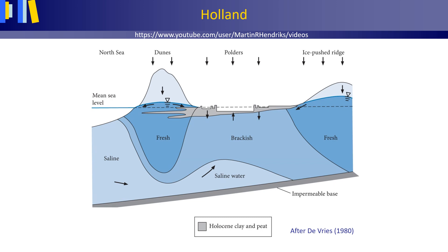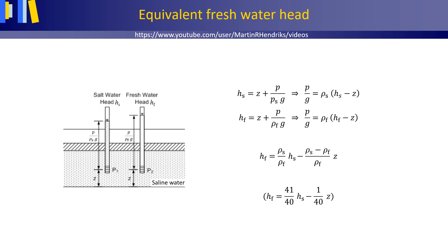This figure is a geohydrological profile through the western part of the Netherlands, Holland. Here we have the mean sea level, the dunes, the Holocene polders, and some 50 kilometers to the east, a Pleistocene ice-pushed ridge. The subsurface is made up of fresh, brackish, and saline groundwater. Fresh groundwater, as a source of drinking water, is found both below the coastal dunes and under the ice-pushed ridge. When both fresh and brackish or saline water are present in the subsurface, observed hydraulic heads are no longer an adequate measure of the total energy of the groundwater, unless their values are corrected for differences in the density of the groundwater.